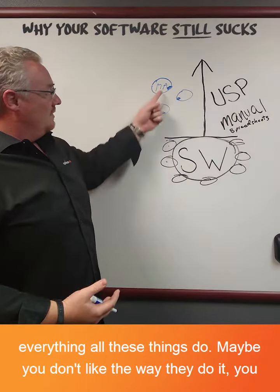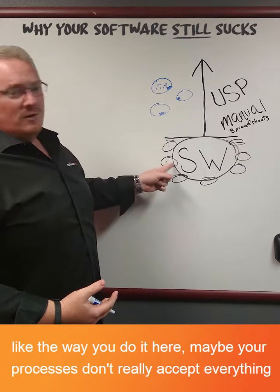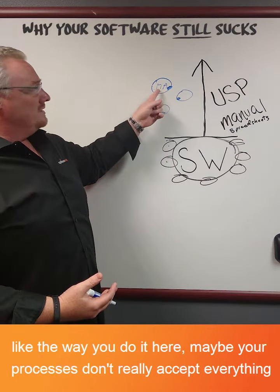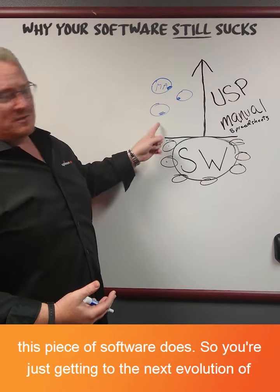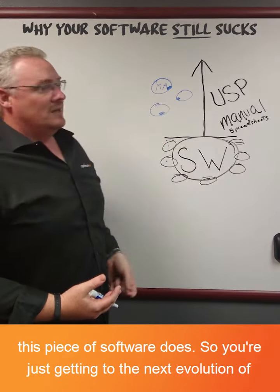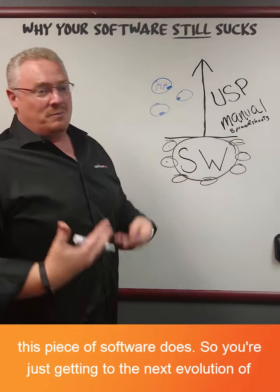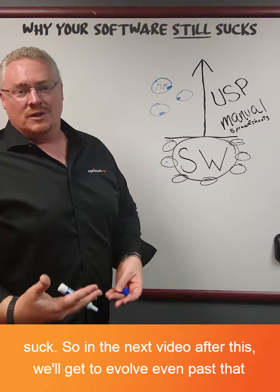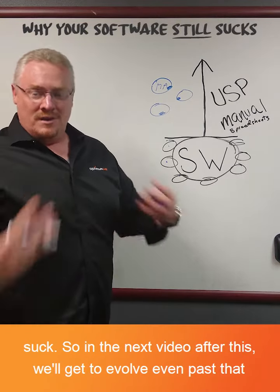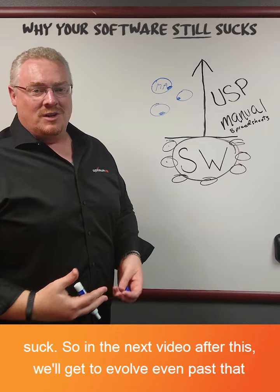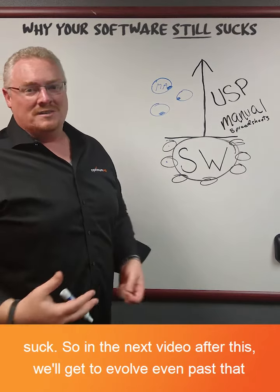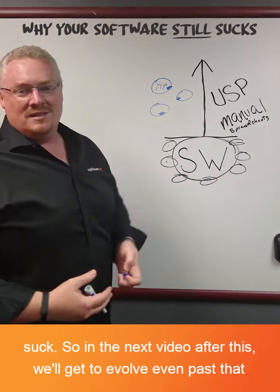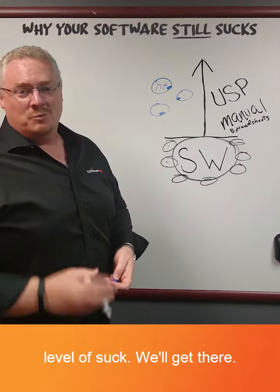Maybe you don't like the way they do it — you like the way you do it. Maybe your processes don't really accept everything this piece of software does. So you're just getting to the next evolution of suck. In the next video, we'll evolve even past that level of suck. We'll get there.